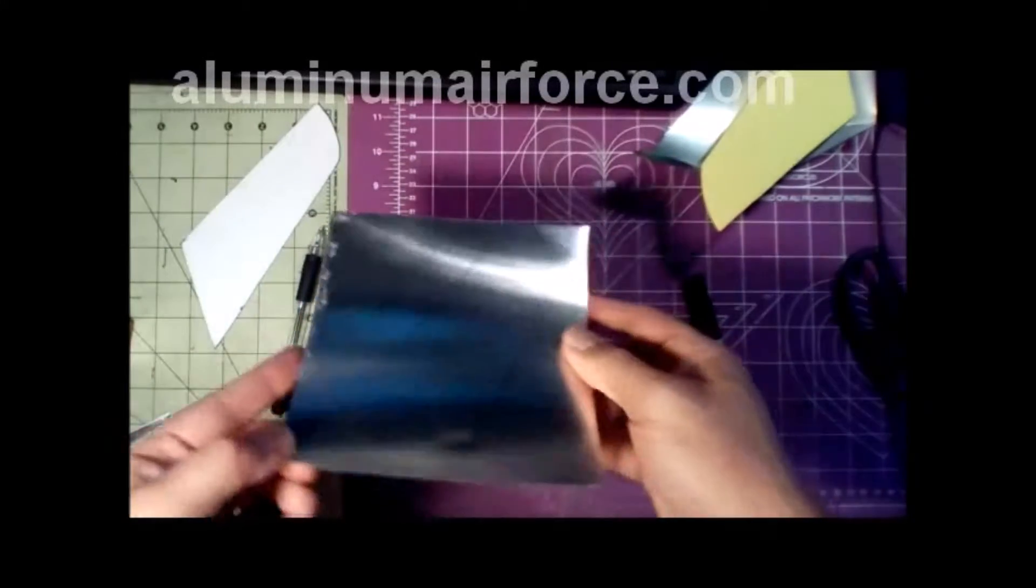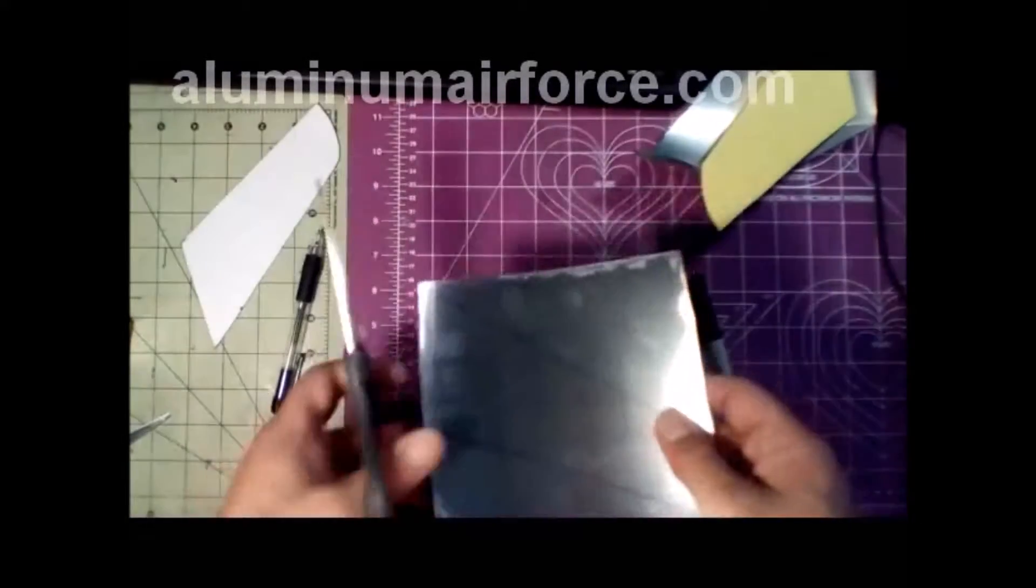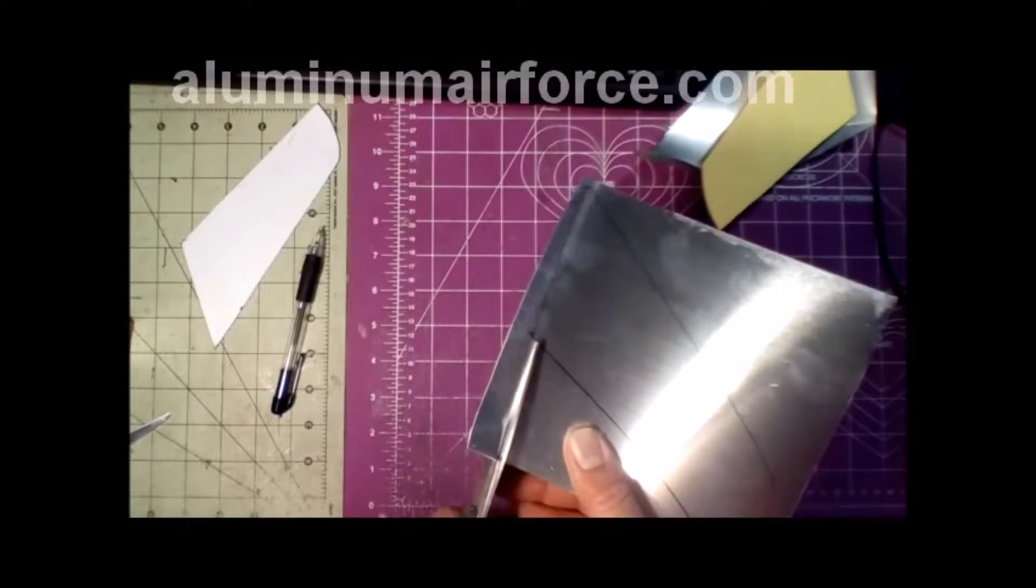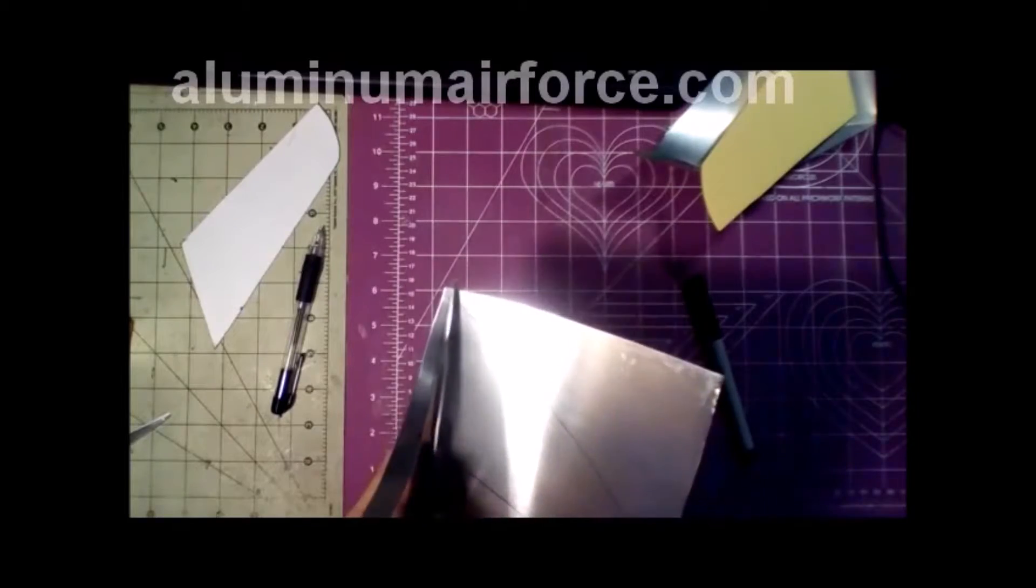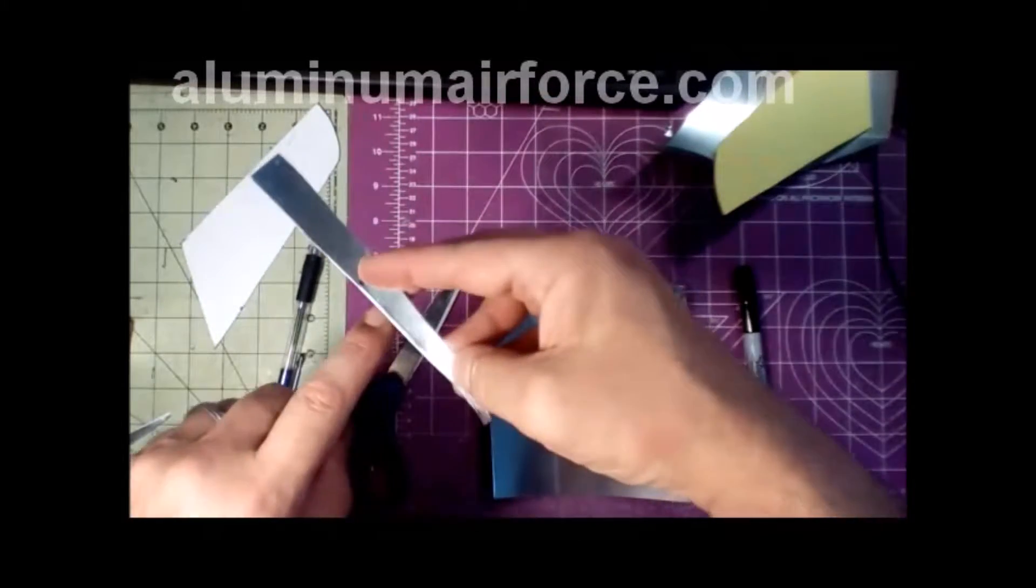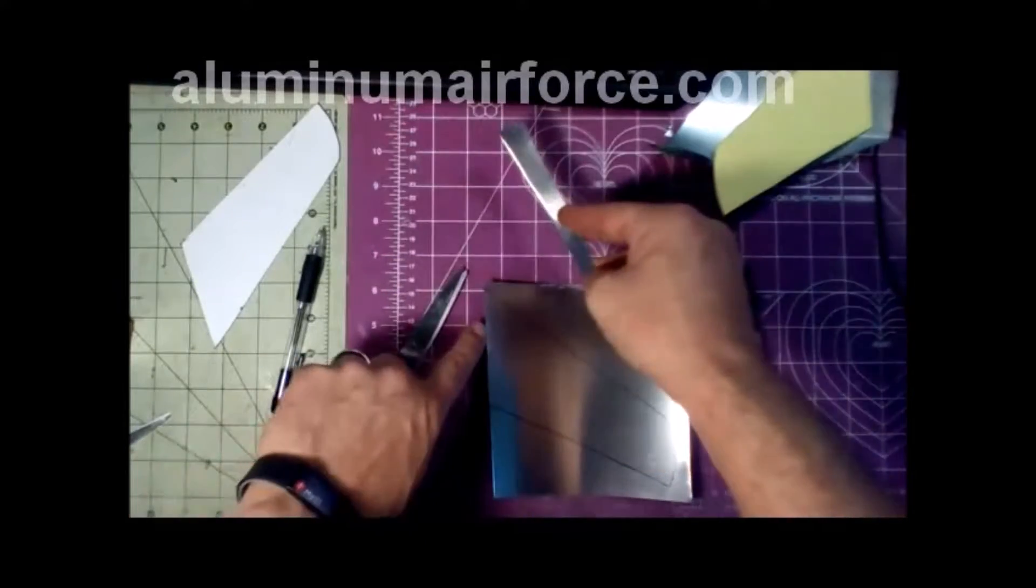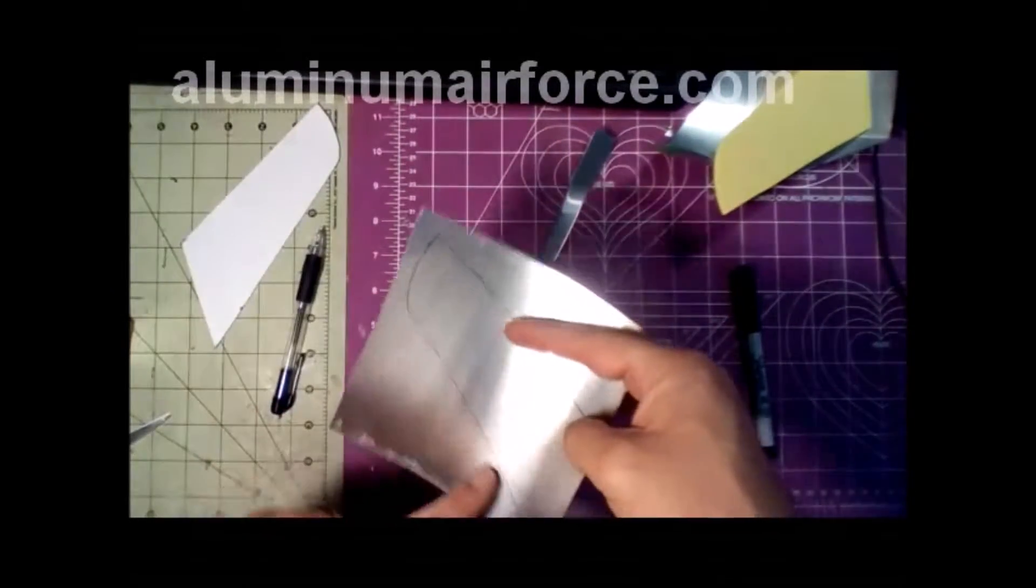Now we're going to cut this out with a pair of heavy duty scissors. We're going to cut inside the edge, probably about a sixteenth of an inch on each of the edges. You'll notice that I'm not cutting on the line. I'm cutting inside the line about a sixteenth of an inch. About a sixteenth of an inch inside of the line.